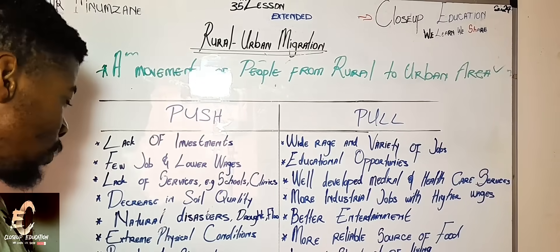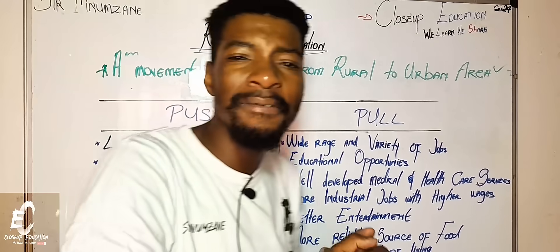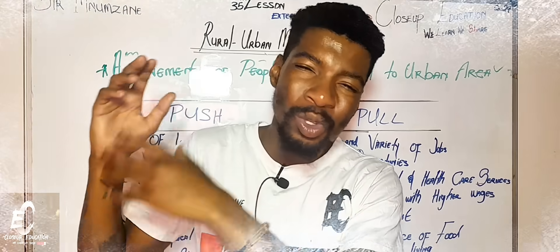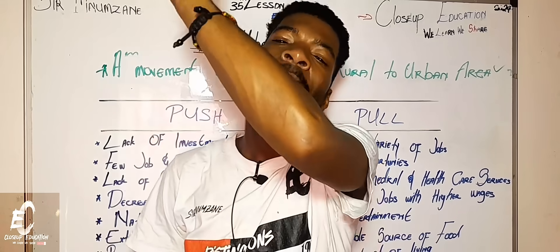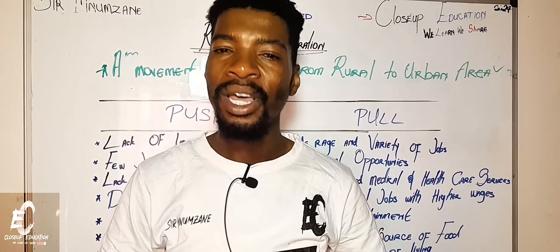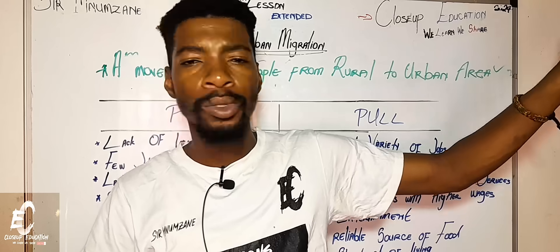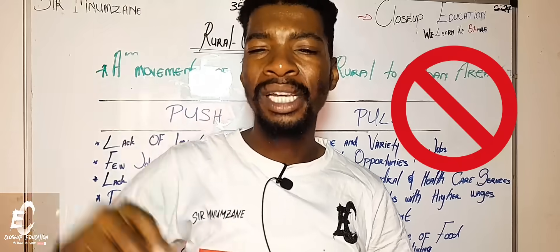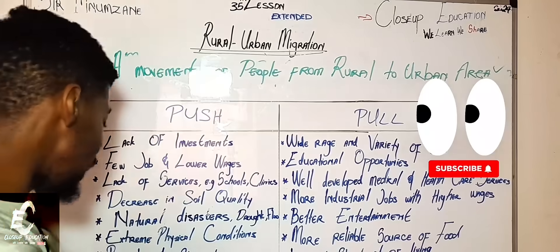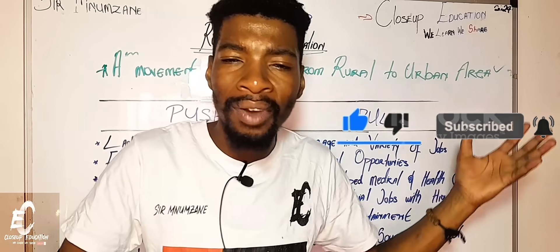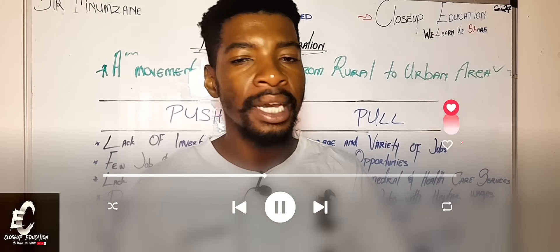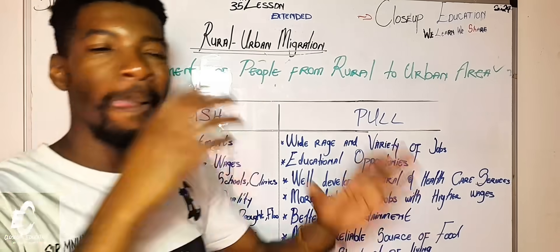The sixth push factor is extreme physical conditions — too much sun, extreme climate, too much cold, or mountains. If you have to walk kilometers up and down mountains before reaching another area or finding a service, those hard physical conditions can push people to leave. Finally, poverty and starvation can also force people to leave and try to find a better quality of life. We want to live long and healthier, so we might try to move.